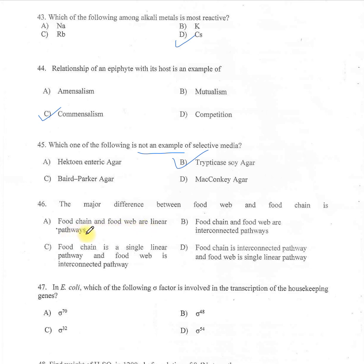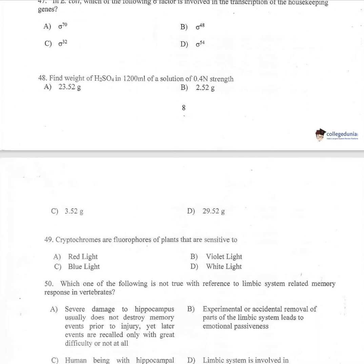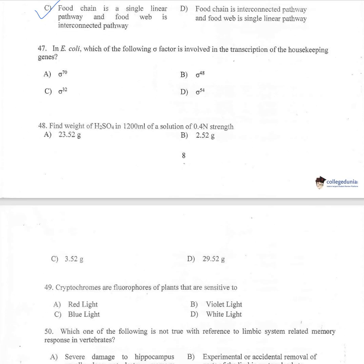Question number 46: The major difference between food web and food chain is — A: both are linear pathways, B: both are interconnected pathways, C: food chain is a single linear pathway and food web is an interconnected pathway, D: food chain is interconnected and food web is a single linear pathway. The correct option is C.